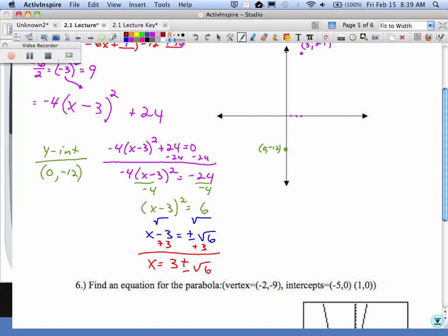So with 3 plus the square root of 6, square root of 6 is a little bit more than 2, so you'd say like 3 plus 2 point something and that would end up right there. I would just call it 3 plus the square root of 6, comma 0. And if I go 3 minus 2 point something, it would be about right here. So 3 minus the square root of 6, comma 0. And then our graph is coming down here.